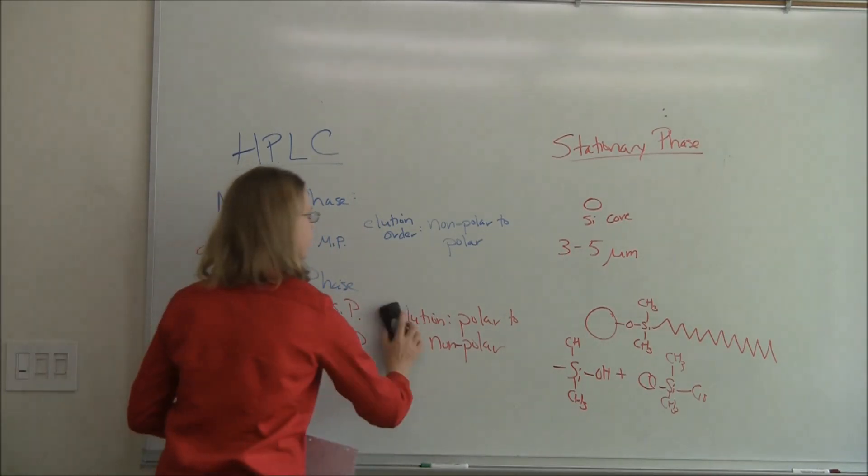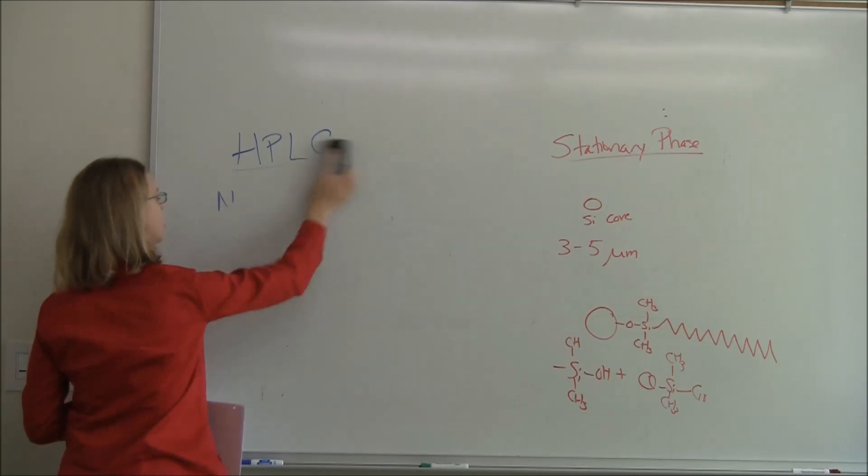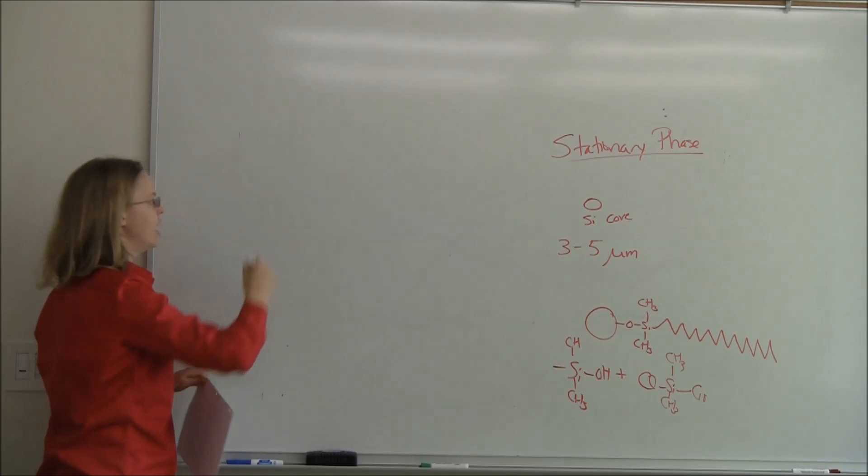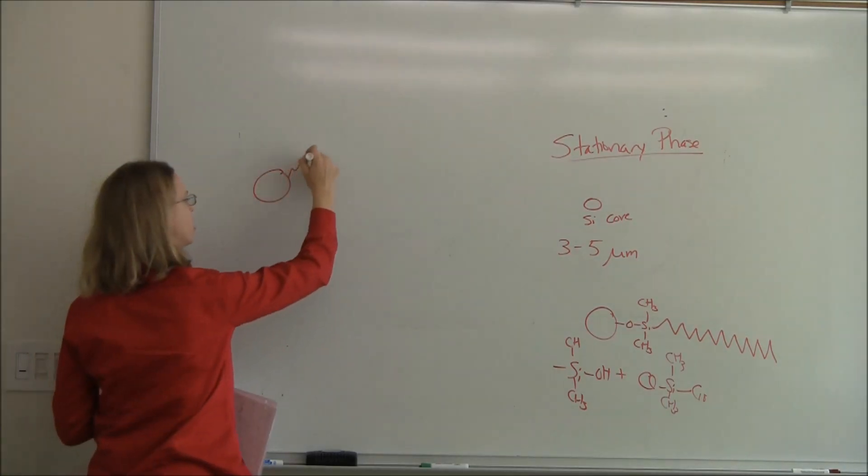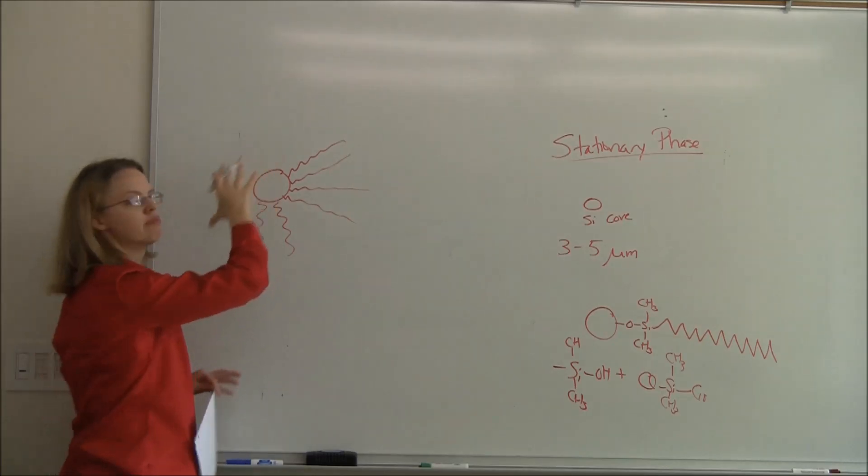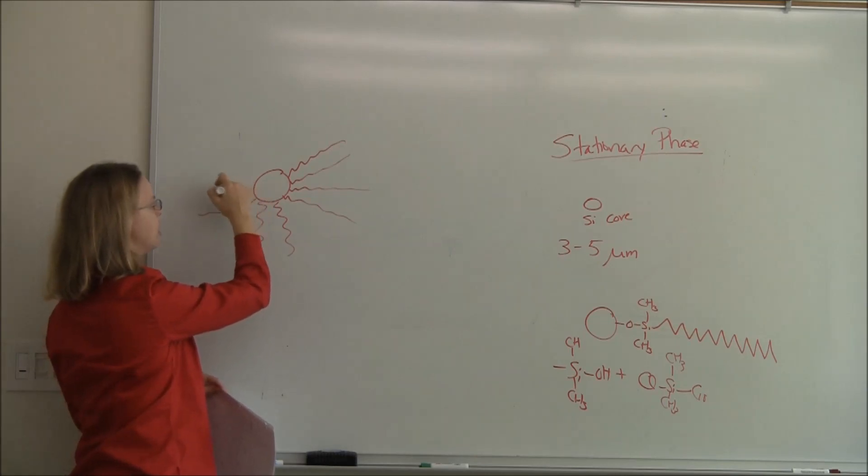Oftentimes what we do, if we want to think about our particle - and I have to admit, these are not drawn to scale - the core would actually be huge compared to the chain. We can think of it as having these chains of hydrocarbon sticking out. So that's how we get the nonpolar part. Think massive core, small chain, but I never draw it like that. This is what's in there. And it has a C18.